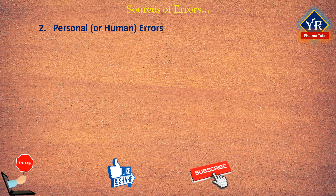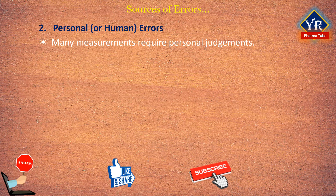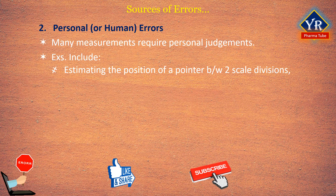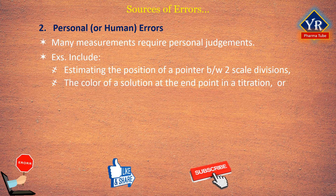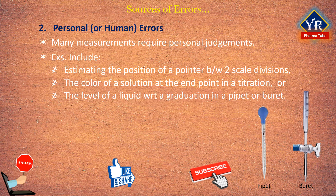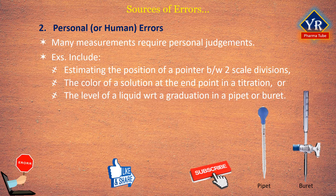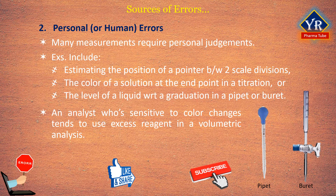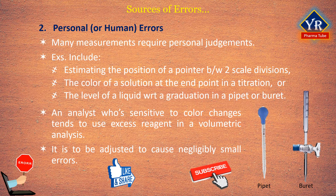Personal or human errors: many measurements require personal judgments. Examples include estimating the position of a pointer between two scale divisions, the color of a solution at the end point in a titration, or the level of a liquid with respect to a graduation in a pipette or burette. Such judgments are often subject to systematic unidirectional errors. For example, one person may read a pointer consistently high, another may be slightly slow in activating a timer, and a third may be less sensitive to color changes. An analyst insensitive to color changes tends to use excess reagent in a volumetric analysis.